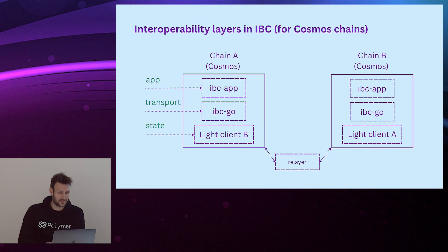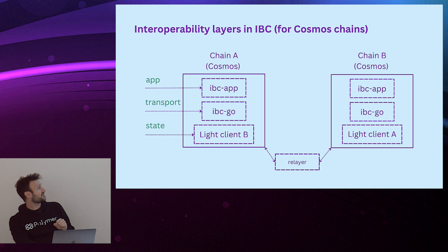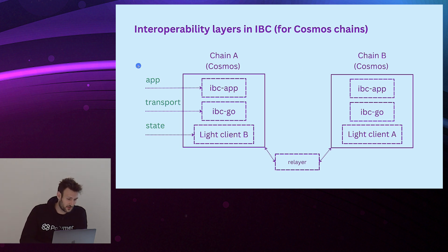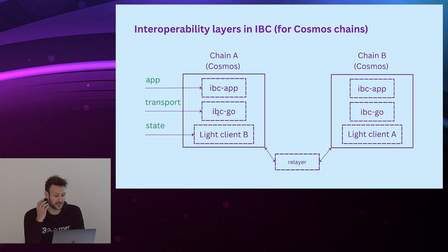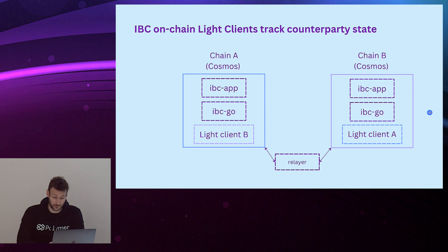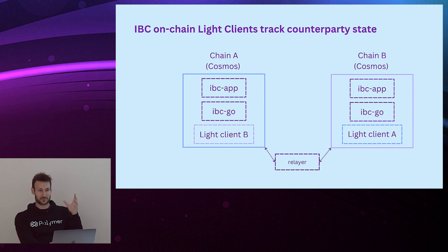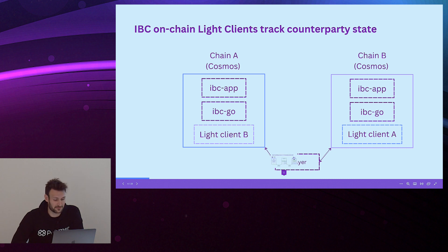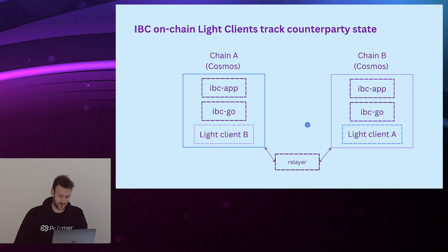In a regular Cosmos chain, this looks as follows. You have an IBC application, IBC-Go is essentially the native transport layer implementation in Cosmos SDK chains, and then we have light clients. Through the colors you can see that light clients are essentially tracking the consensus state and are able to verify headers to update the consensus state from each other. In the middle we have a relayer, which is a permissionless off-chain process that sends over the packets of data.